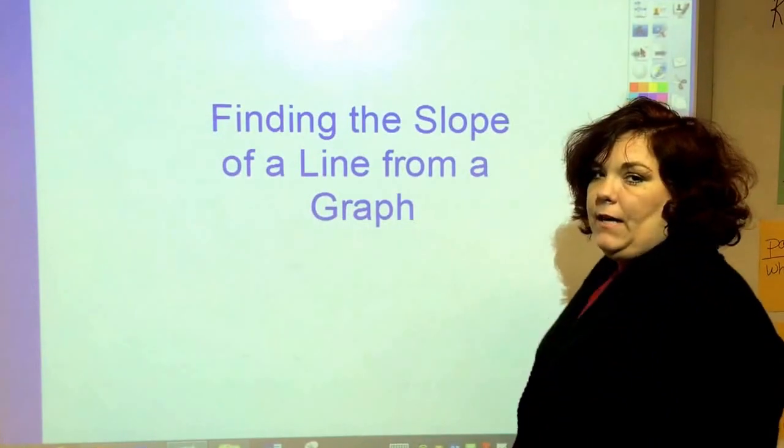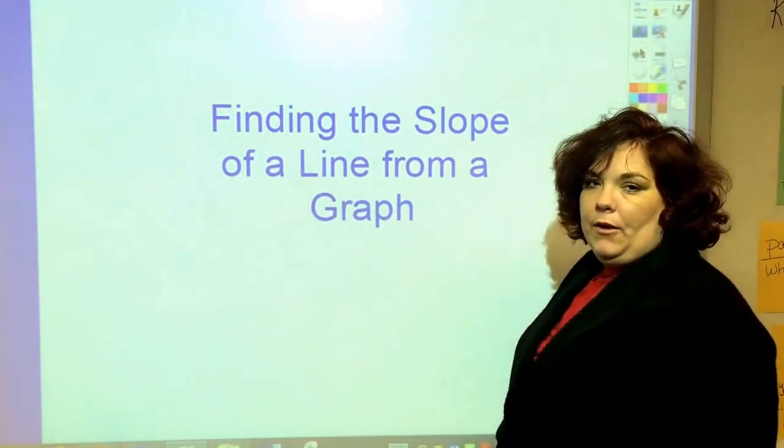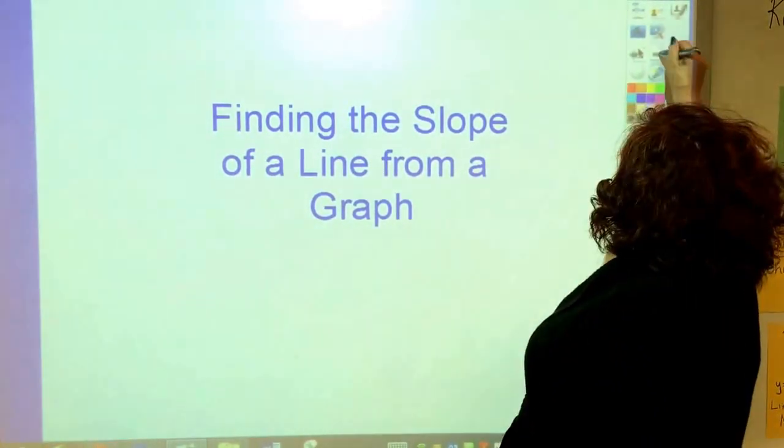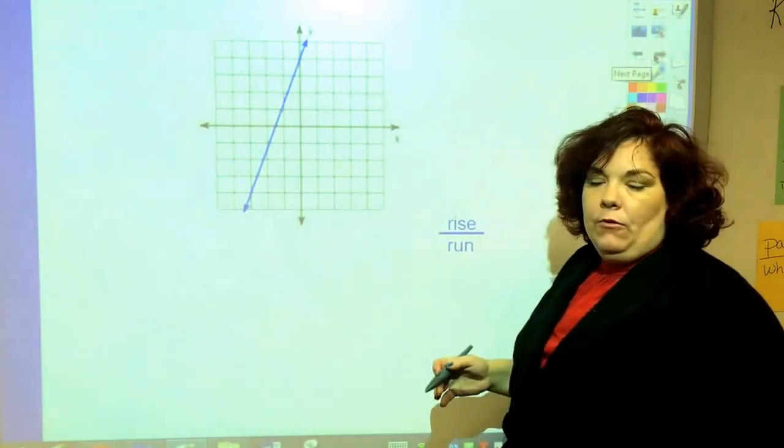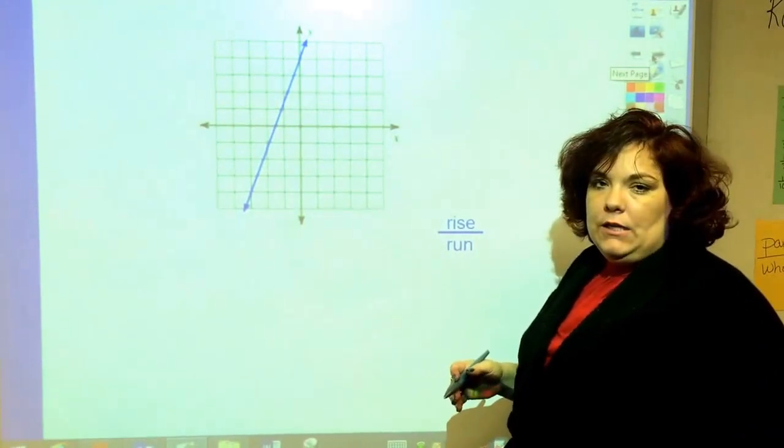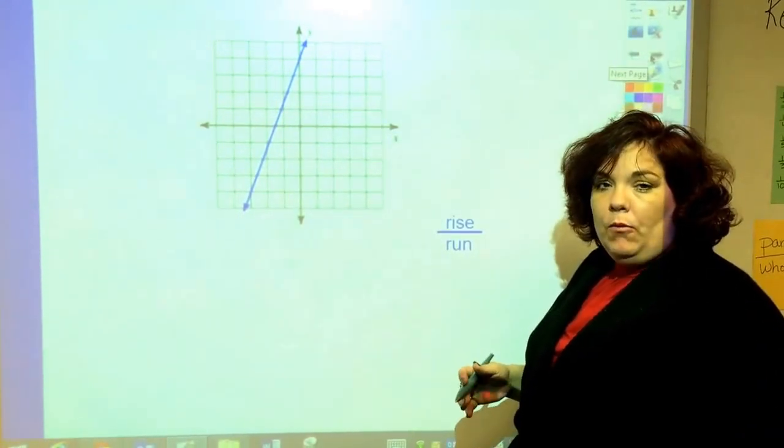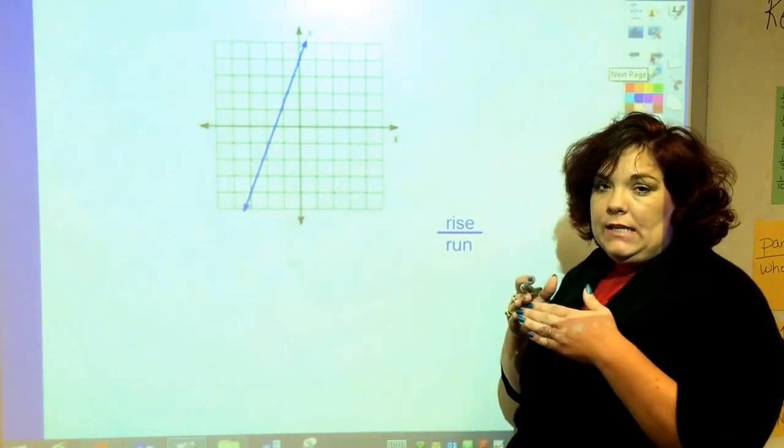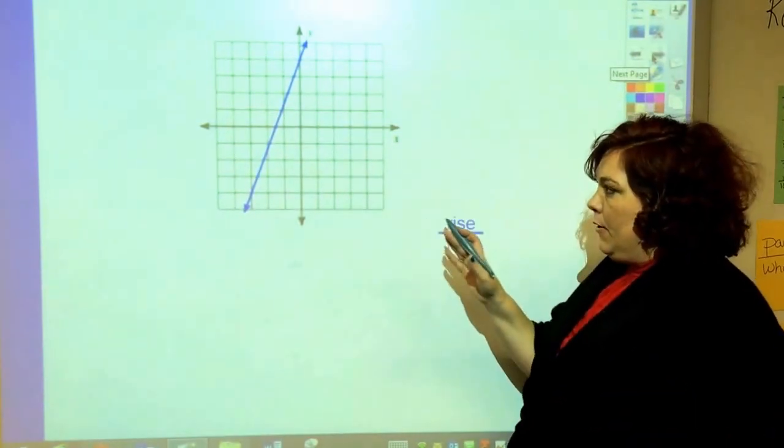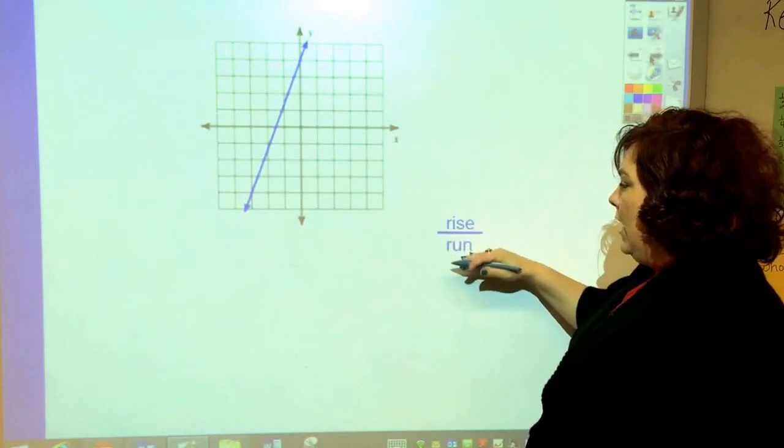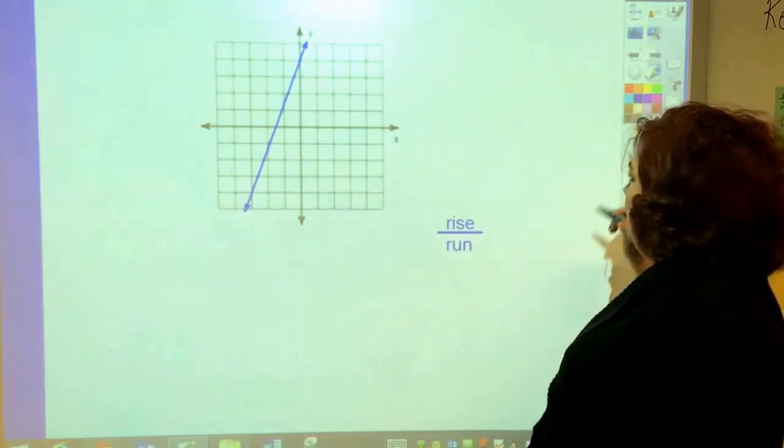This video is about finding the slope of a line from a graph. And when you have a graph, the great thing that you can do is to find two points that intersect with a number on the graph and then do rise over run. Let me demonstrate.